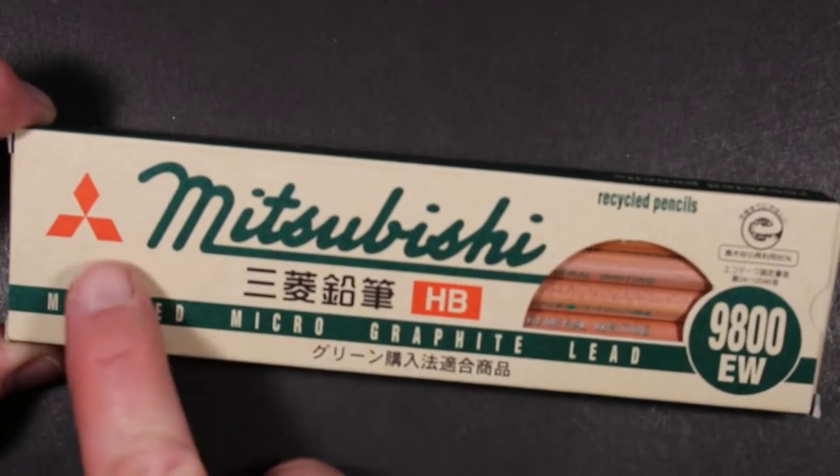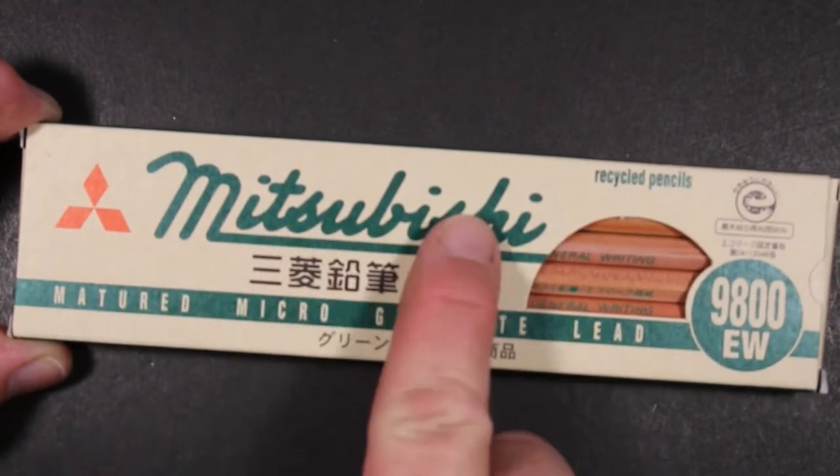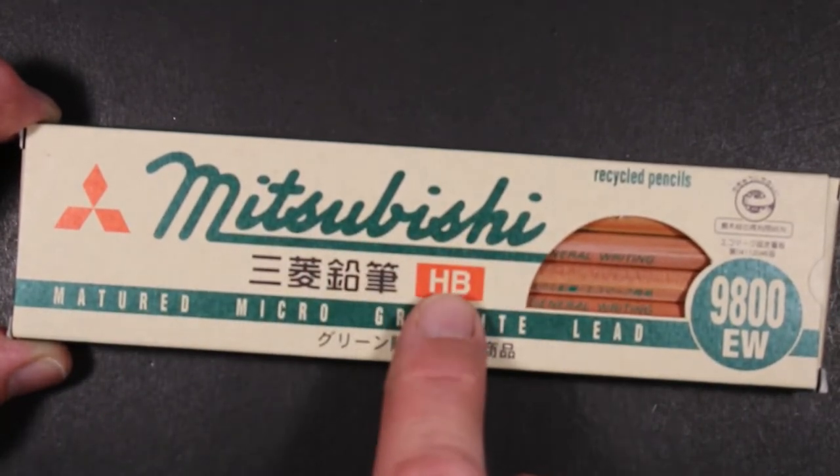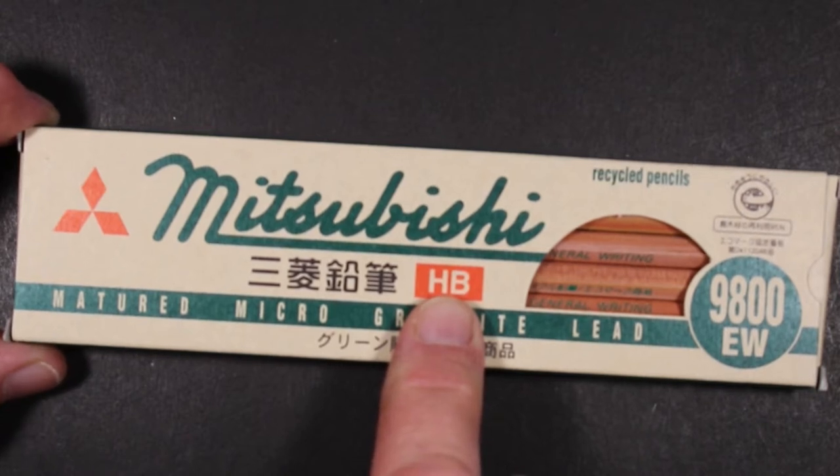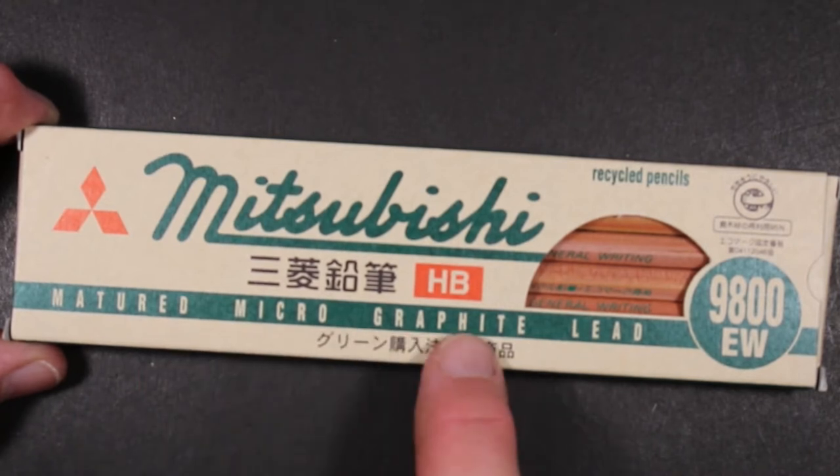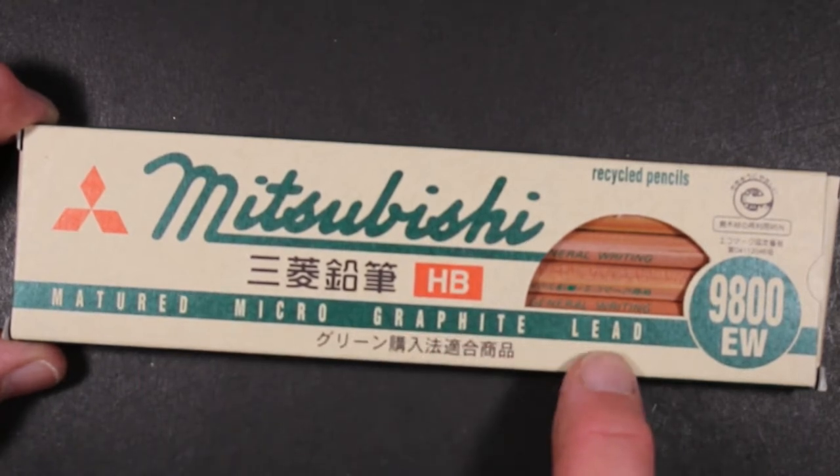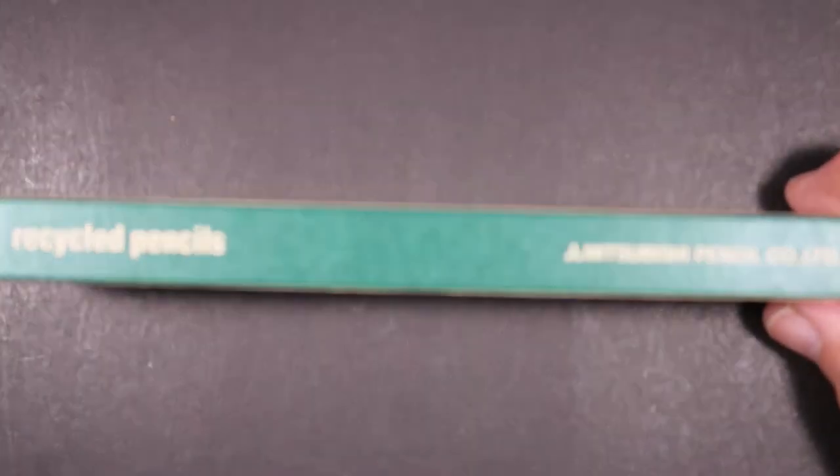Of course we have the Mitsubishi logo, Mitsubishi. These are HB, so a number two pencil, matured micro graphite lead is what it says here. Turning it over on the side.